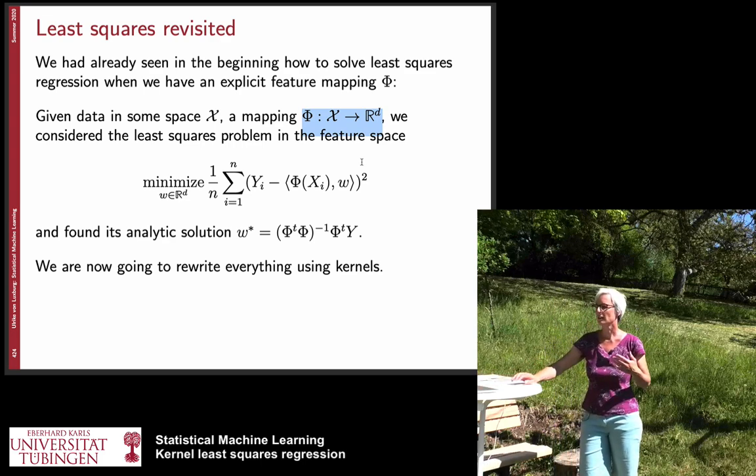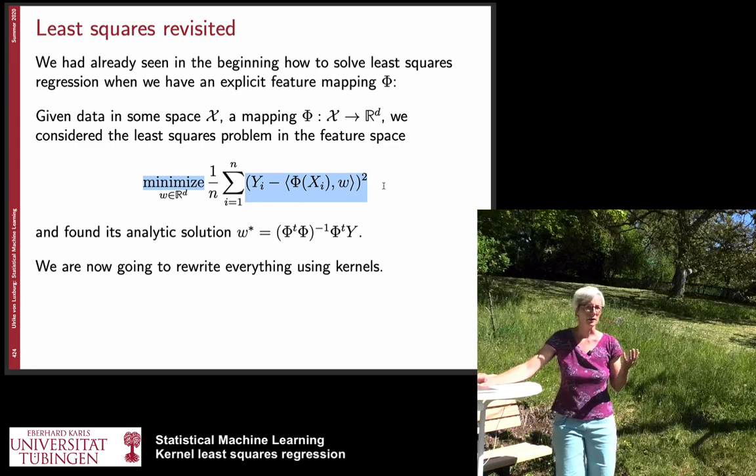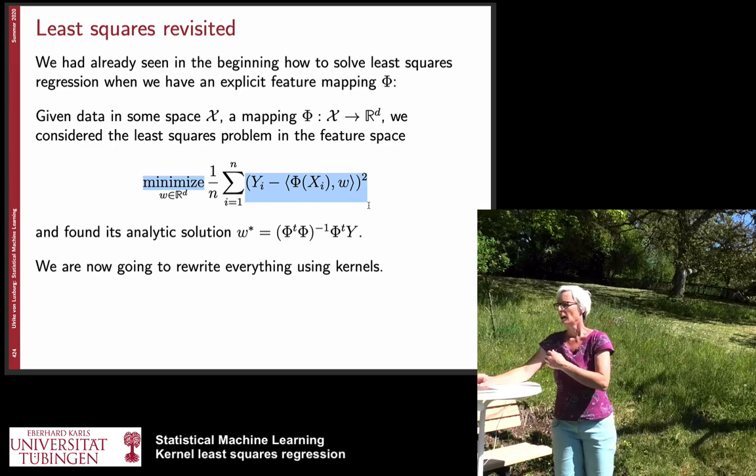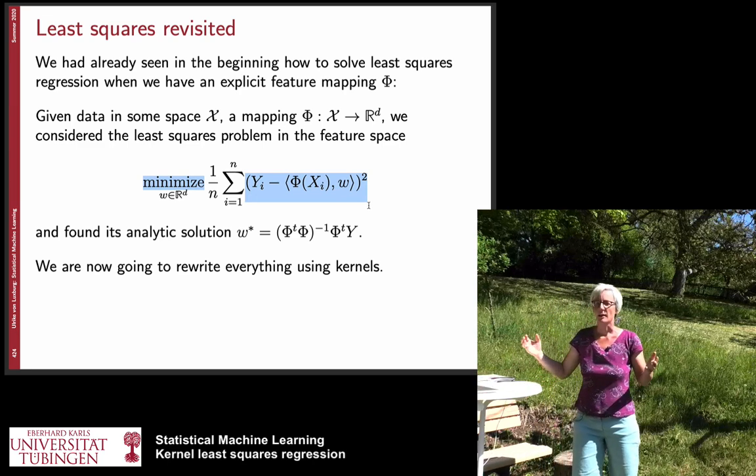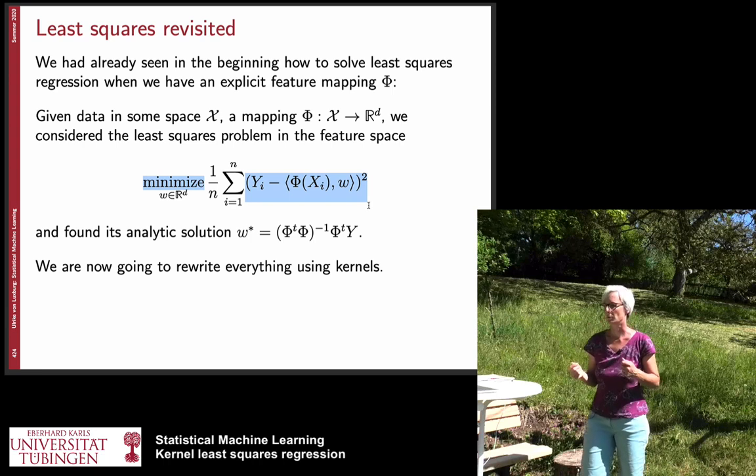So what we did is we said we have this feature map that takes us from x to rd and then we considered this least squares optimization problem, here it is completely without any regularization so far, where we wanted to optimize the function that can be expressed in a linear way in terms of these feature representations.